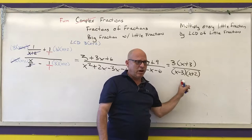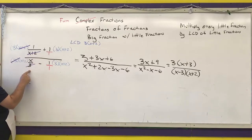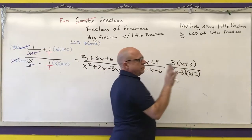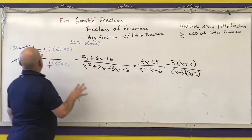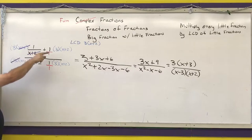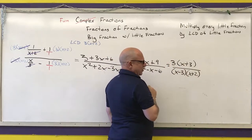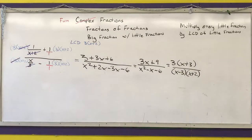One thing to warn you about: we need to take into account anything that appears in the denominators of the little fractions. When is 3 equal to 0? Never. The x plus 2 still appears, so we're good. You need to remember you can't divide by 0 in that little fraction either. The steps are: multiply every little fraction by the LCD, combine like terms, factor, cancel common factors, and write your final answer with any domain restrictions.